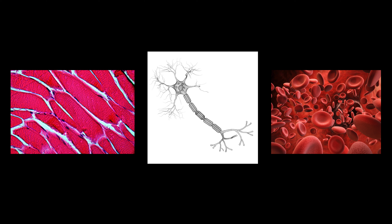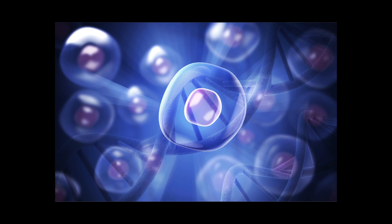Additionally, we discuss specialized cells like muscle, nerve, and blood cells, and introduce the concept of stem cells, which can develop into various cell types and help repair tissues.